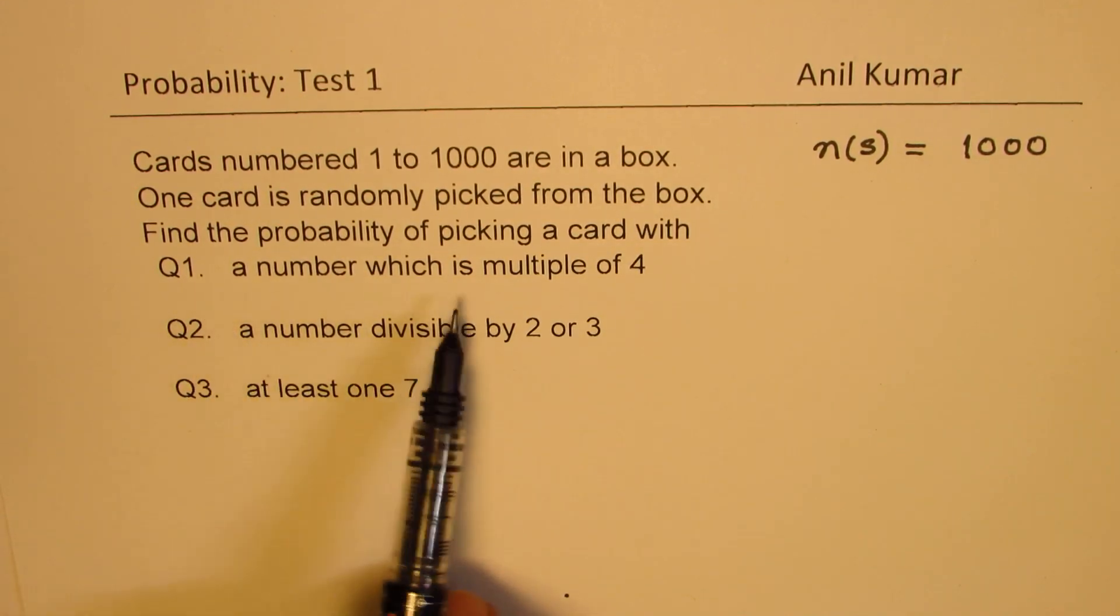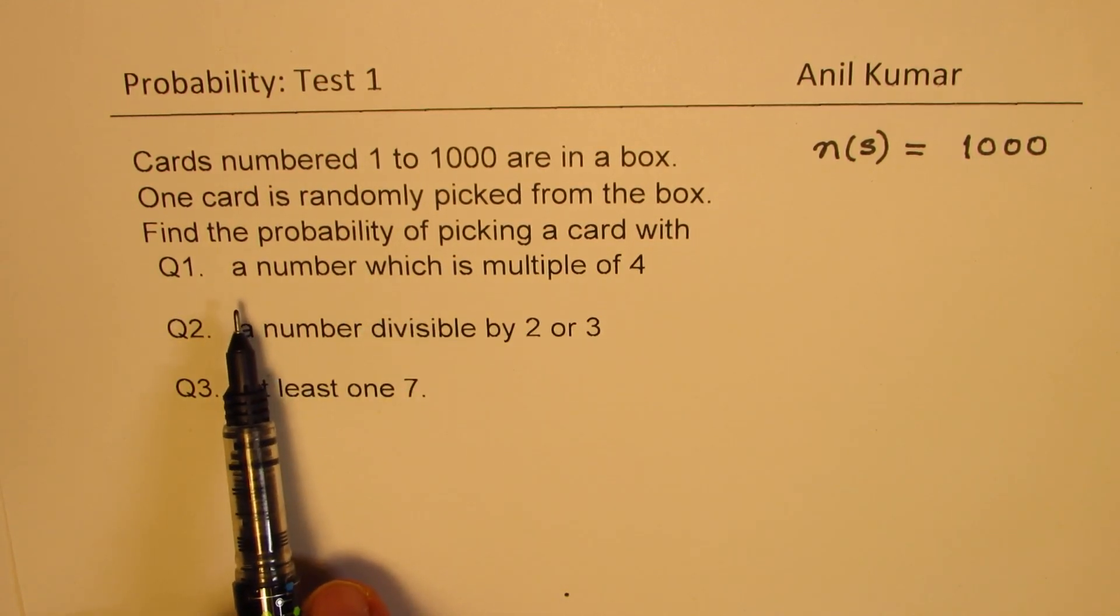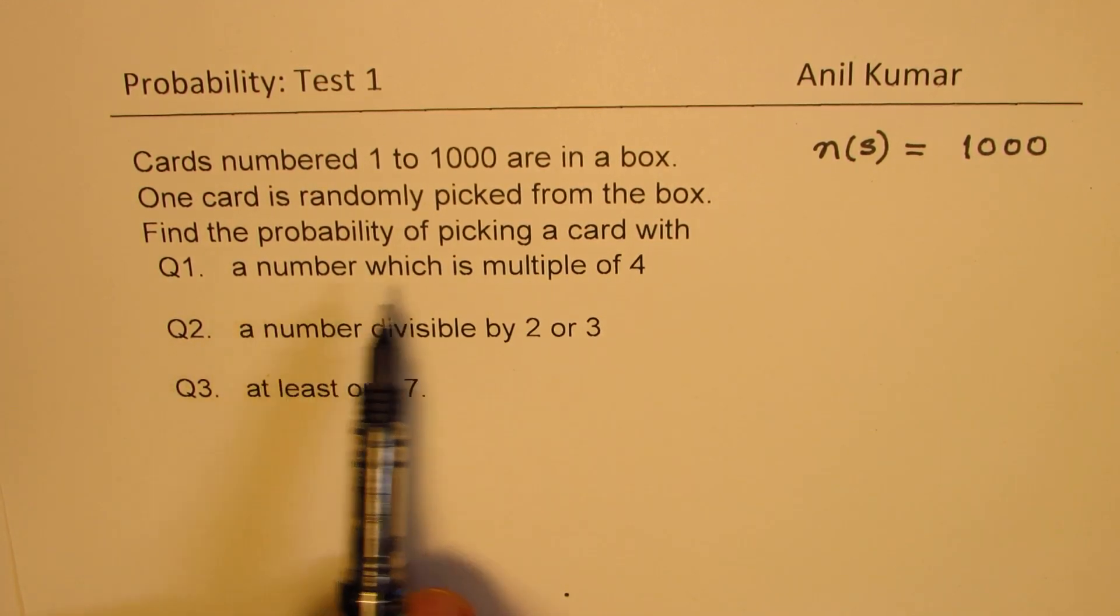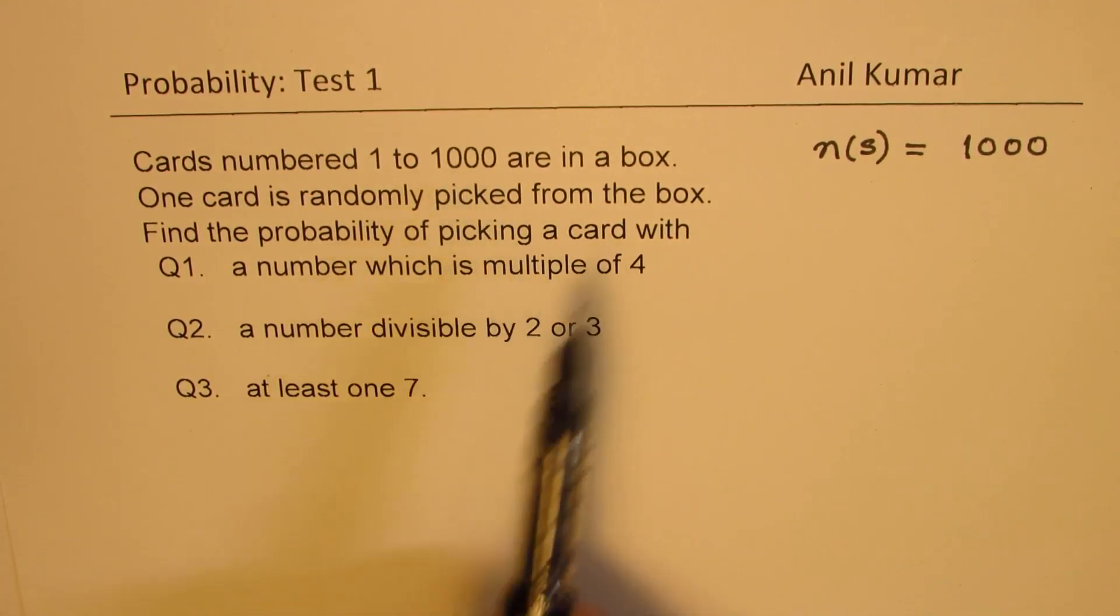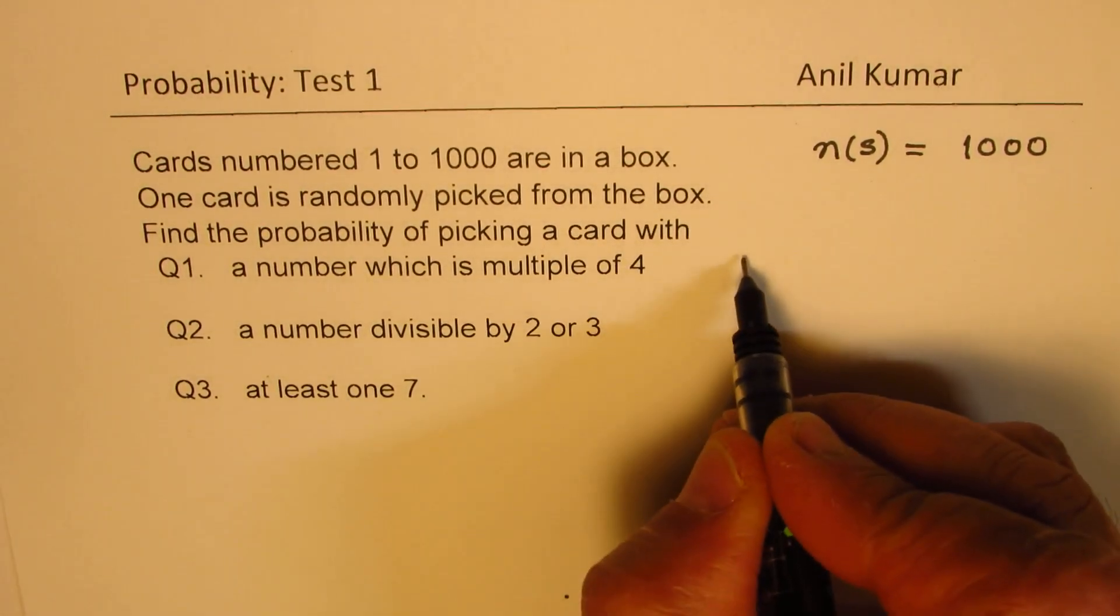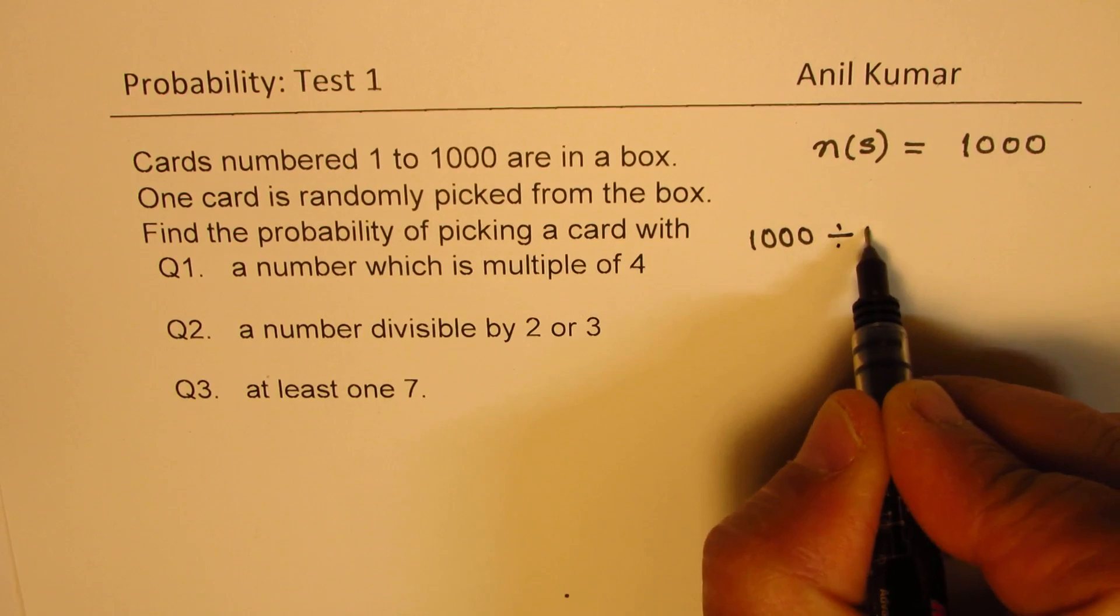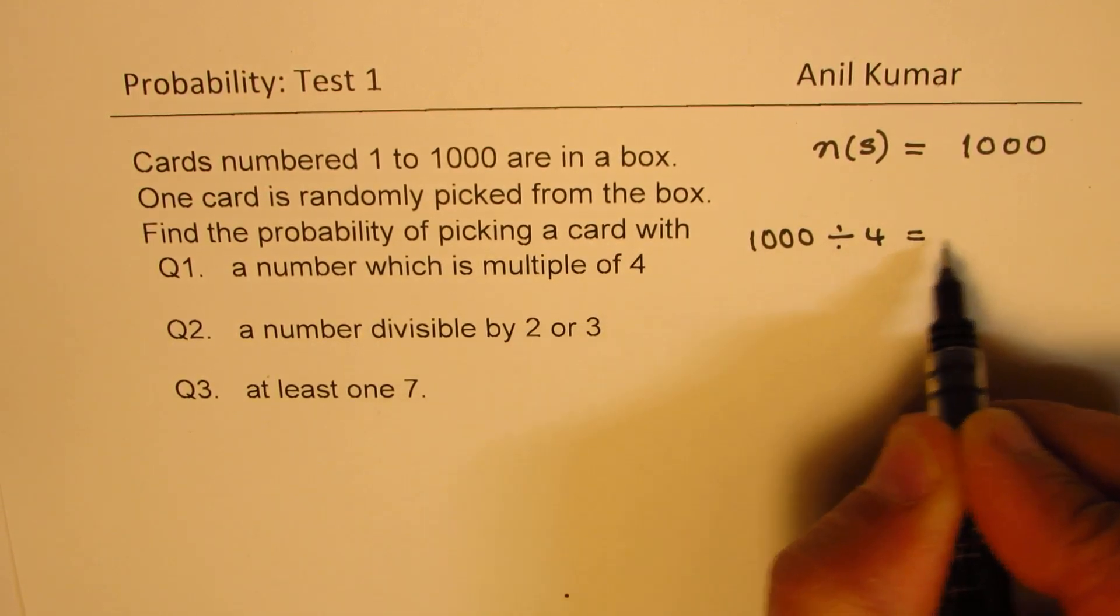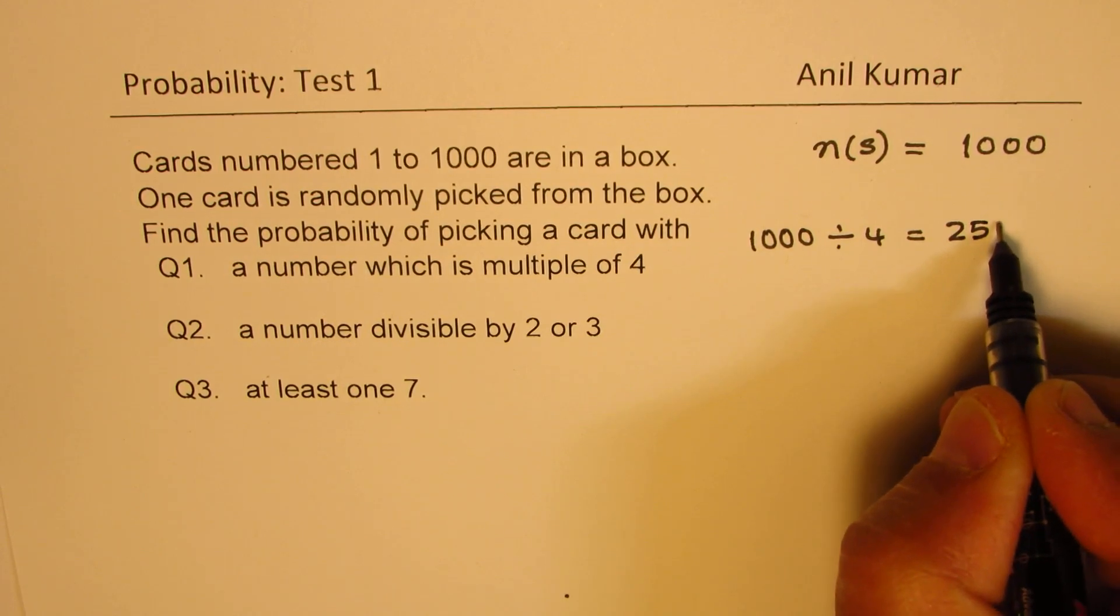Now, in each case, let's look into the favorable events. So in the first one, a number which is multiple of 4. From 1 to 1000, how many multiples of 4 do we have? Well, if I divide 1000 by 4, half is 500, then half of that is 250. So we have 250.